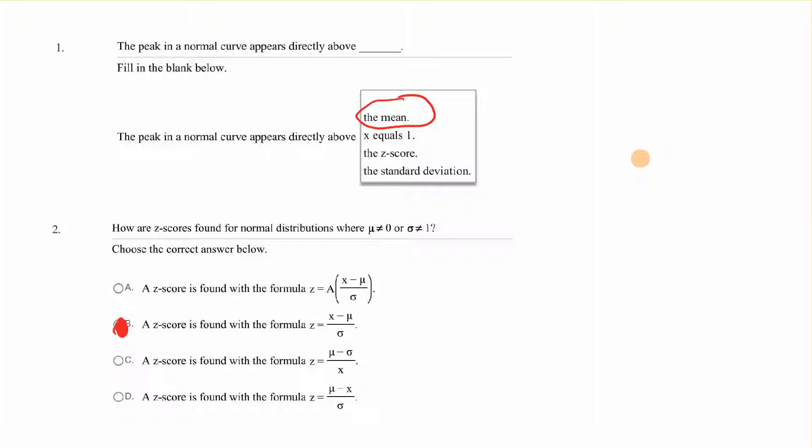The peak in a normal curve appears directly above, and that will be a pull-down menu. The peak is directly above the mean. Number 2 says, how are z-scores found for normal distributions? We're looking for the formula. A z-score is found with the formula z equals x minus mu over sigma. So that's x minus the mean over the standard deviation.